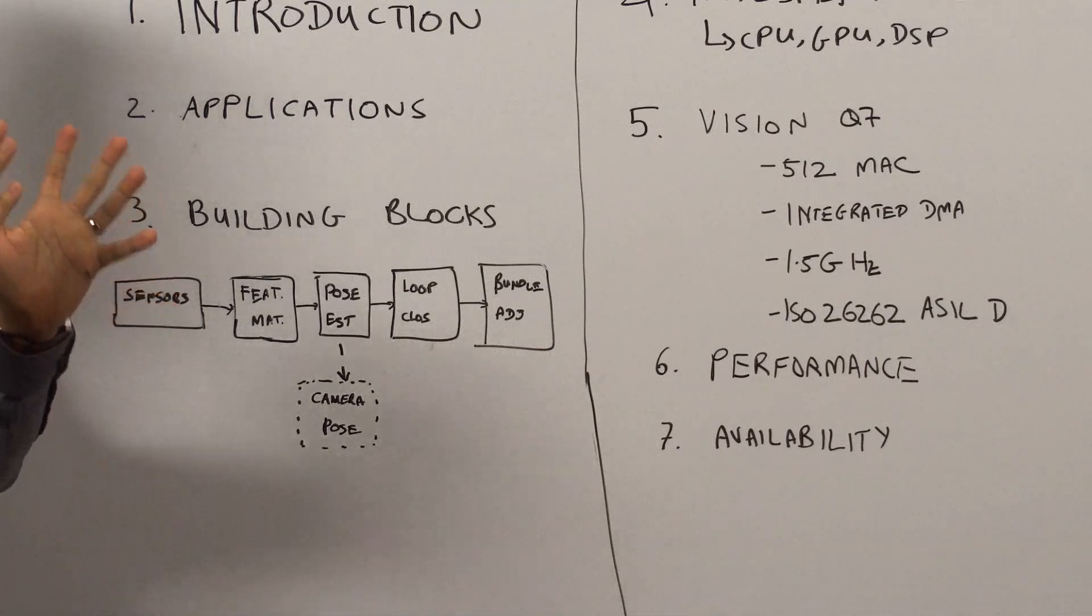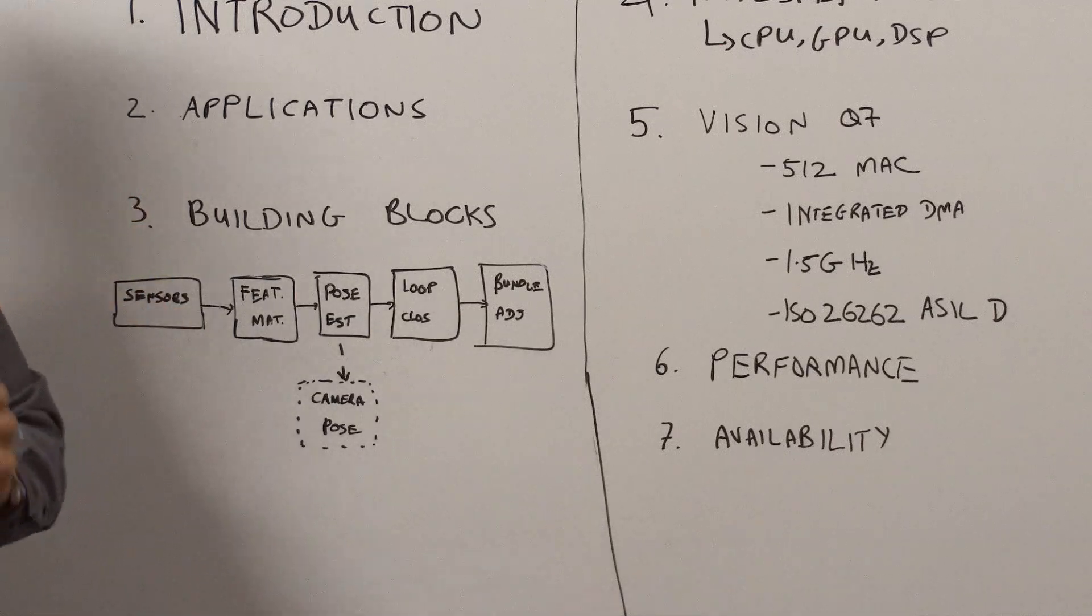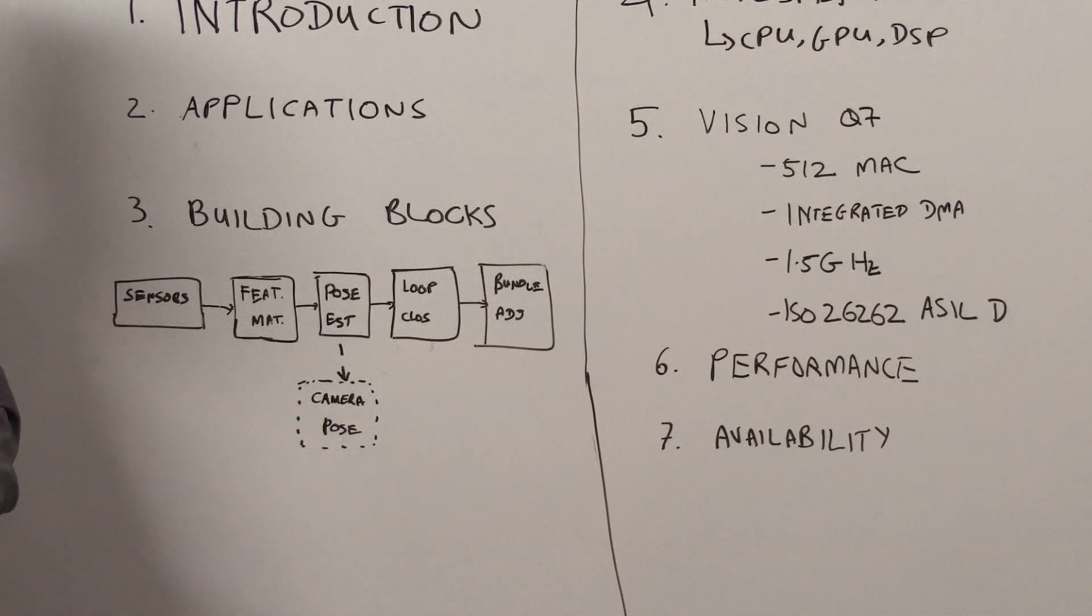Understanding how the points have moved from frame one to frame two allows you to get a pose estimation which basically gives you your camera pose orientation and position.